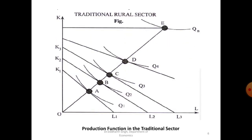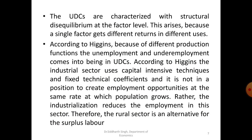The production function of the rural or traditional sector is shown in this figure. The isoquants Q1, Q2, Q3, and Q4 show variable coefficients of production. In order to produce more output, more labor is employed relative to capital. As a result, good land — here referred to as capital — becomes scarce, and the available land is cultivated by highly labor-intensive techniques. At point E, the maximum output level is reached, shown by QN. Thus, according to Higgins, because of these different production functions, unemployment and underemployment emerge in underdeveloped countries.